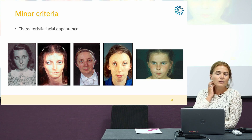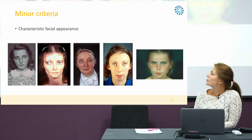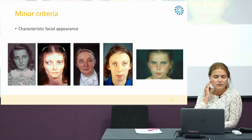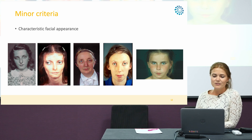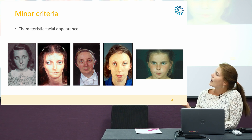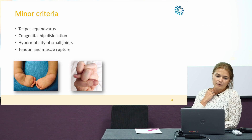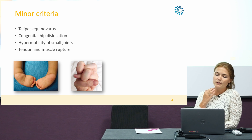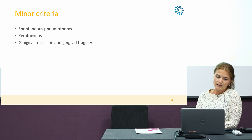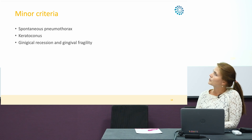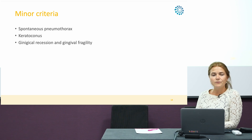The typical facial appearance, also called the Madonna-like appearance, features quite prominent eyes, a thin and pinched nose, thin lips, and lobeless ears. While these pictures show quite obvious appearances of vascular EDS, not all patients show such a clearly typical facial appearance. Additional minor criteria include club feet, congenital hip dislocation, hypermobility of the small joints, and tendon and muscle rupture. Other minor criteria include spontaneous pneumothorax, keratoconus, and gingival recession and fragility.